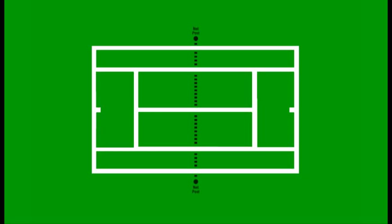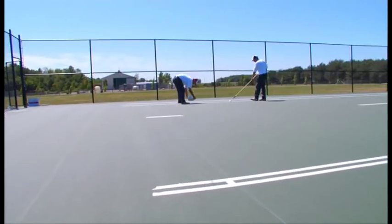To achieve the proper length of the center service line, measure 18 feet from the outside of the baseline up through the center mark toward the center of the court. This will indicate the end of the center service line on each side. Tear the tape and square off each end to prepare for painting.